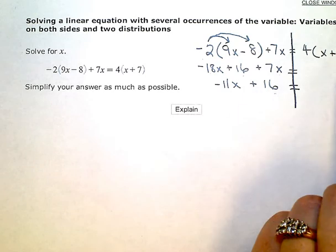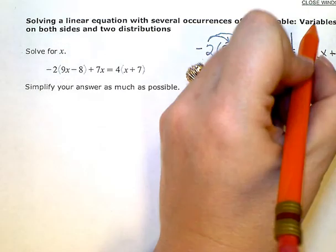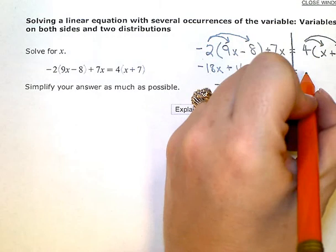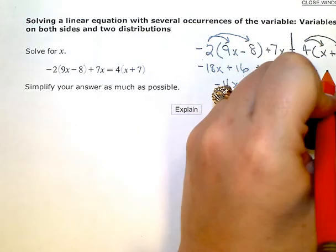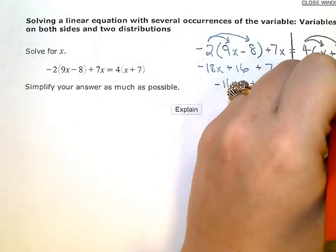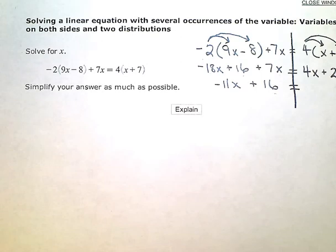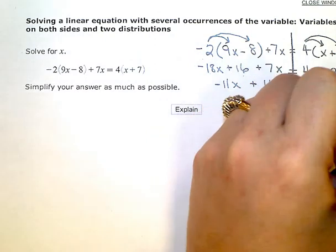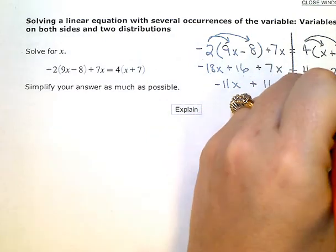So moving over to the right side, I'm going to do the same thing, distribute. 4 times x is 4x, 4 times 7 is 28. Those are not like terms, I can't combine anything there, so I'm just going to bring down both terms, the 4x and the 28.